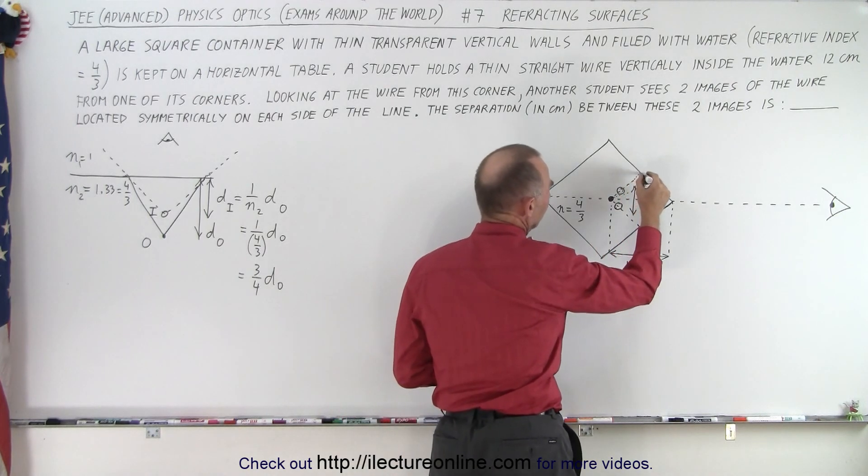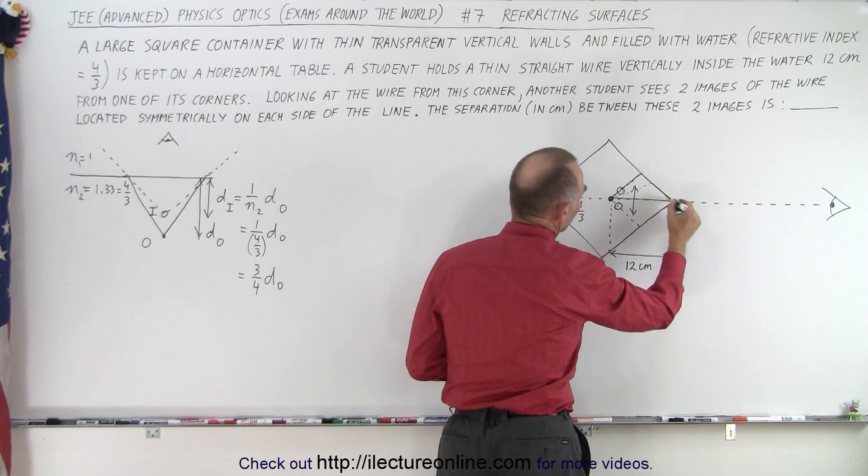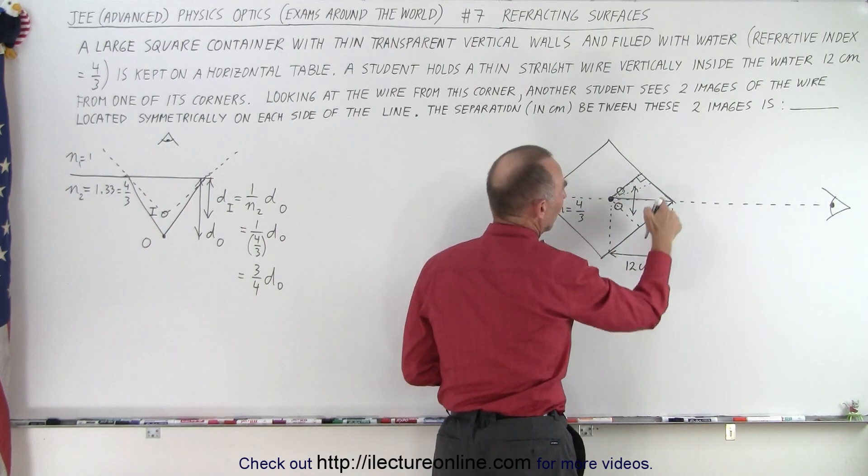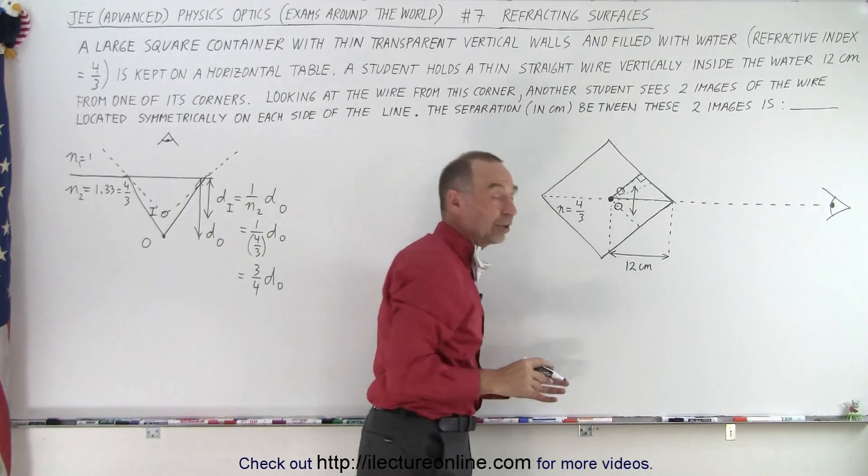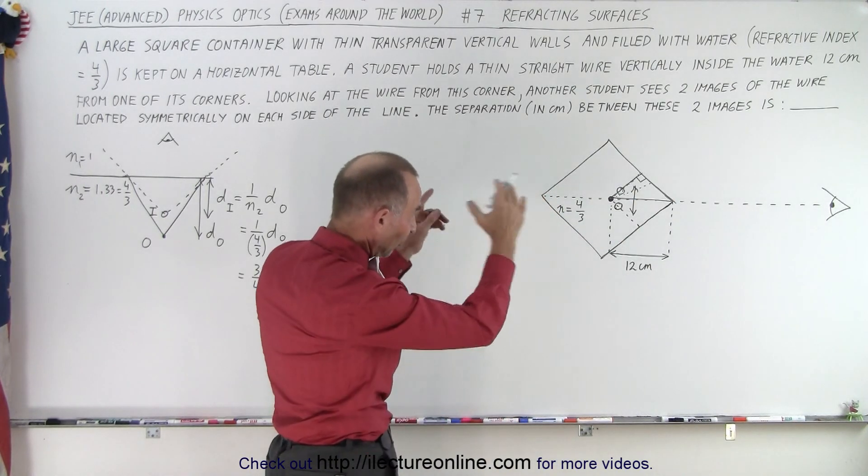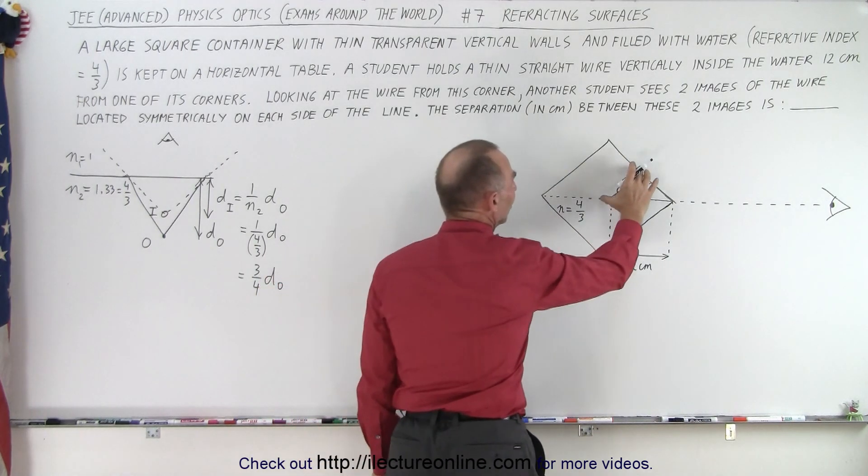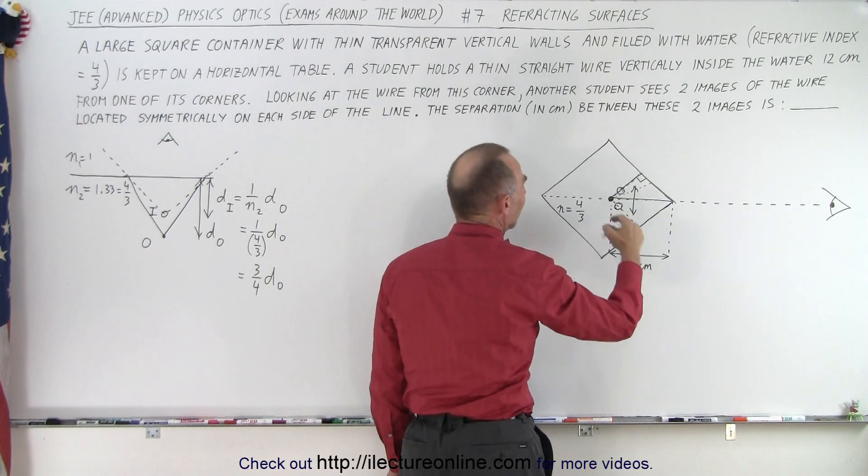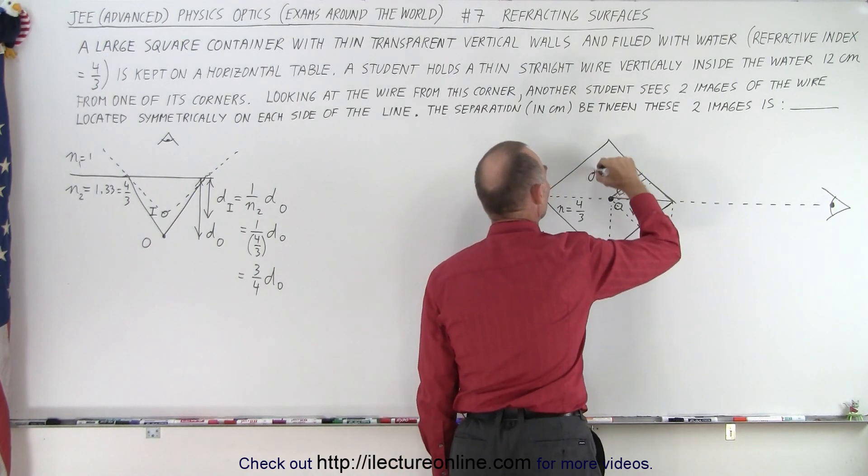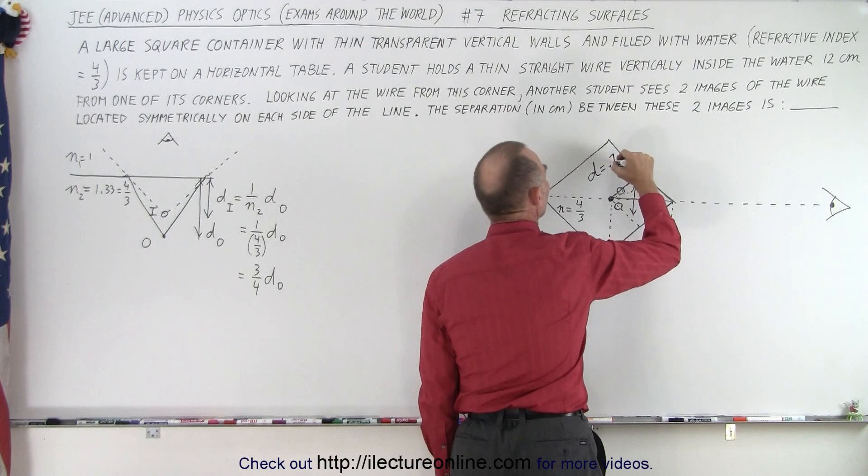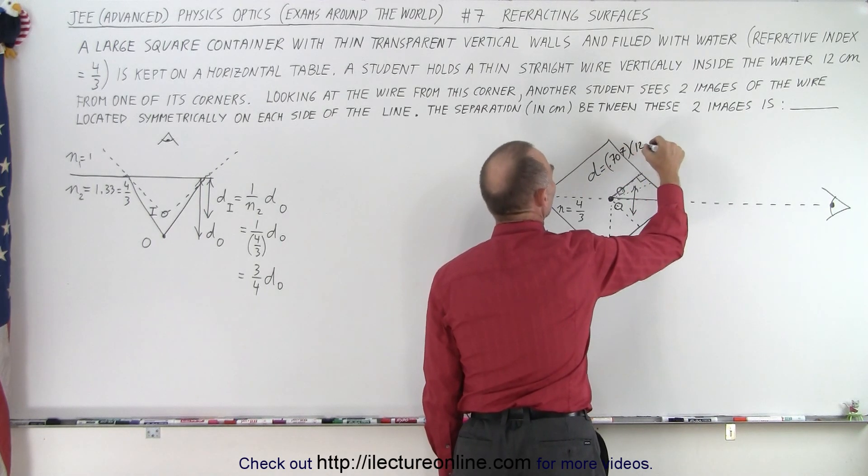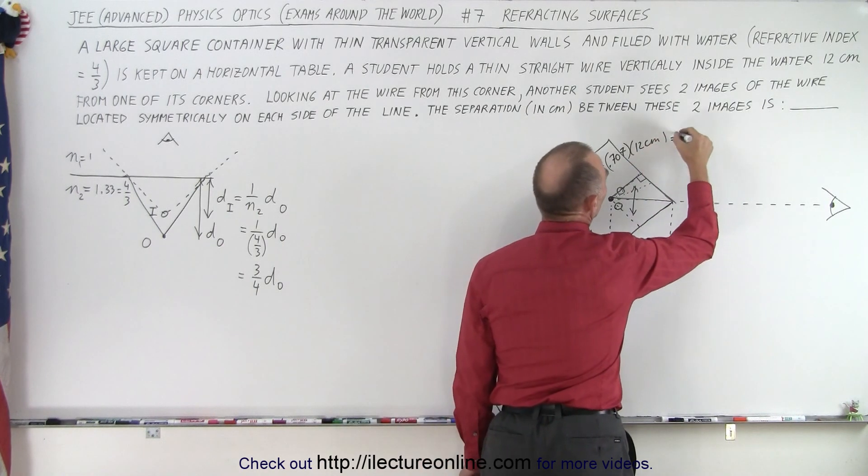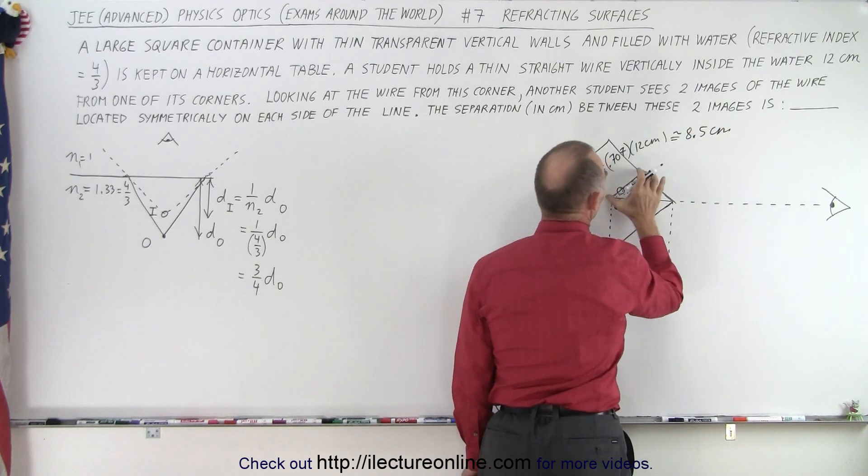First of all, we end up with a triangle. It's a right triangle. This is the hypotenuse, which is 12 centimeters, and we can see that the angles, because of symmetry, need to be 45 degrees, because it's a square. Which means that this distance right here would be the cosine of 45 degrees, which is 0.707, times the hypotenuse. So, this distance is equal to 0.707 times 12 centimeters.